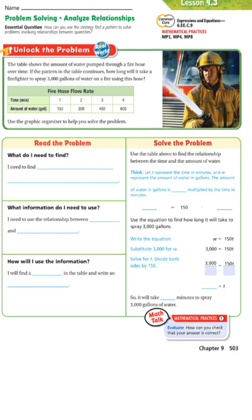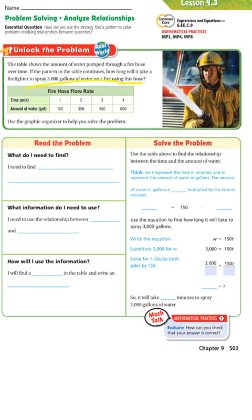The table shows the amount of water pumped through a fire hose over time. If the pattern in the table continues, how long will it take a firefighter to spray 3,000 gallons of water on a fire using the hose? The problem gives you a table here, so let's look at that.